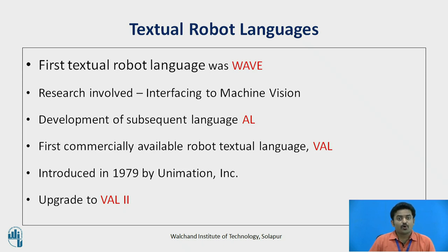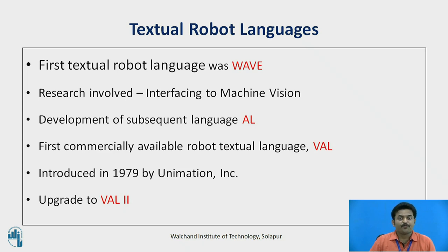The language was called AL and it could be used to control multiple arms in tasks requiring arm coordination. Many of the concepts of WAVE and AL went into the development of the first commercially available textual robot language, VAL — Victor's Assembly Language, after Victor Scheinman. VAL was introduced in 1979 by Unimation for its PUMA robot series.